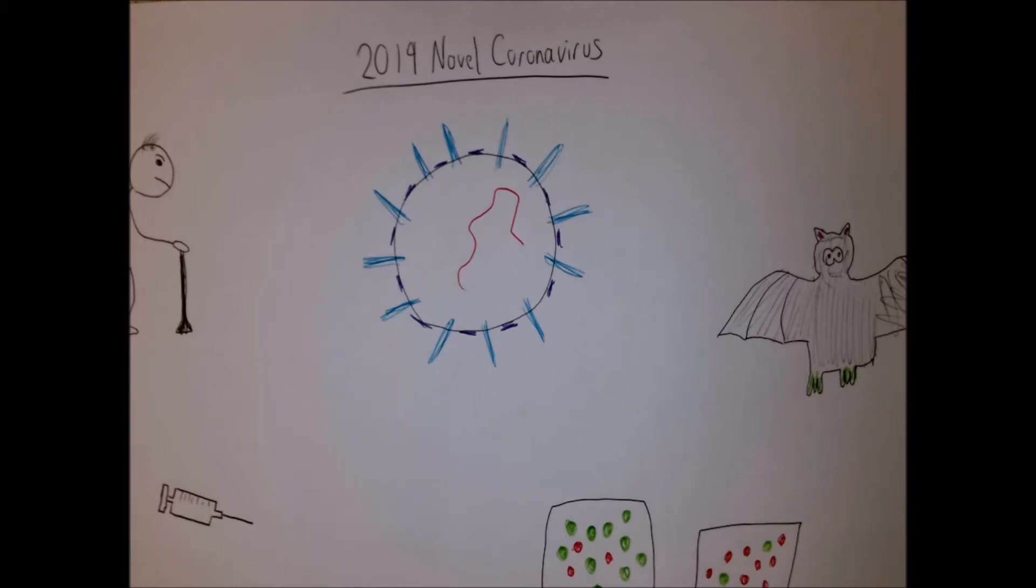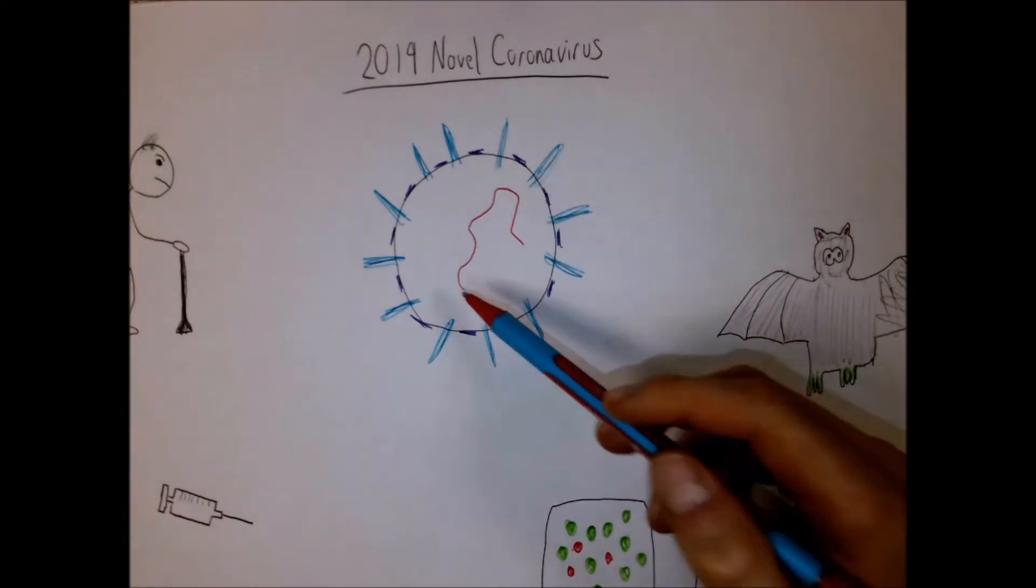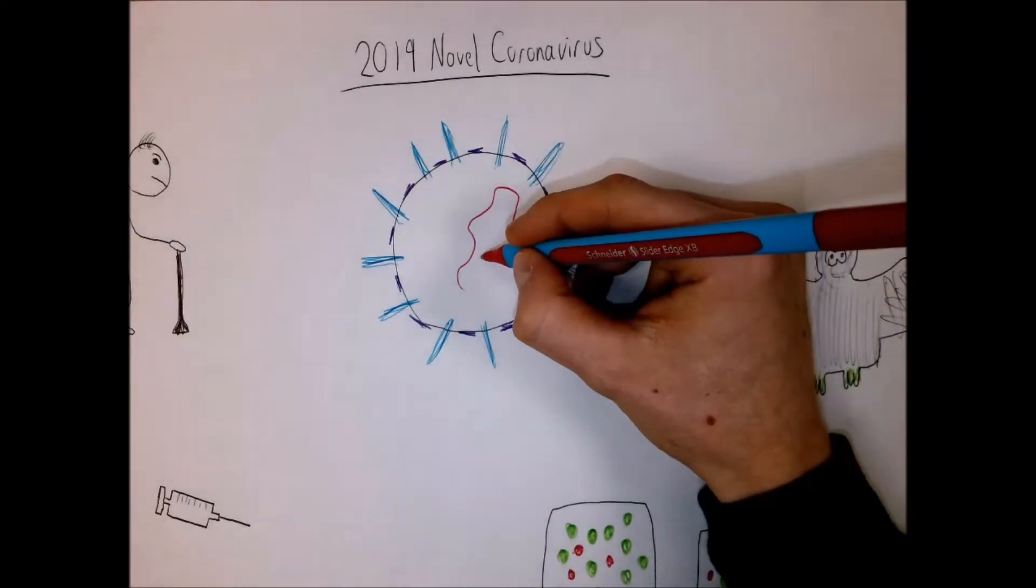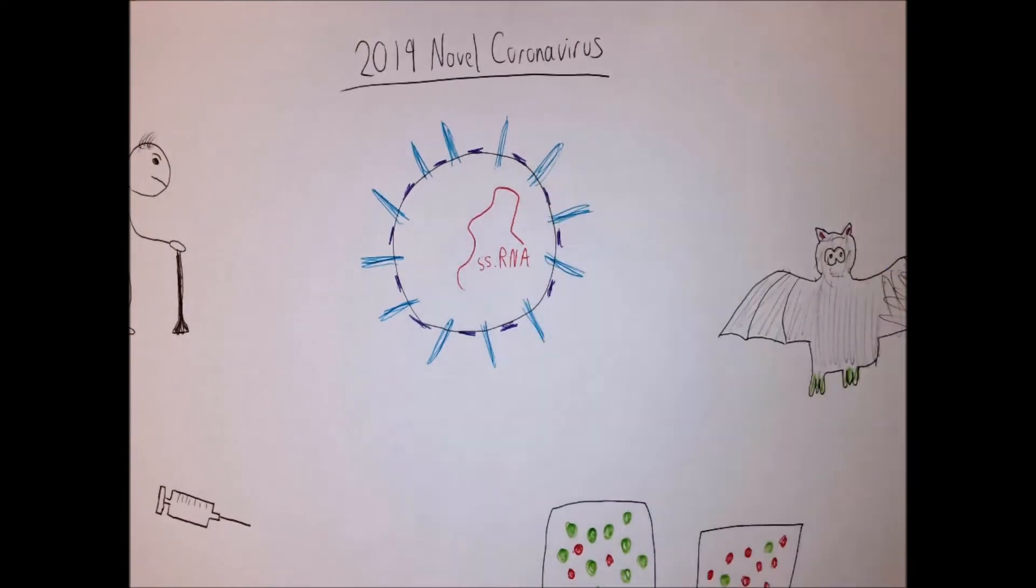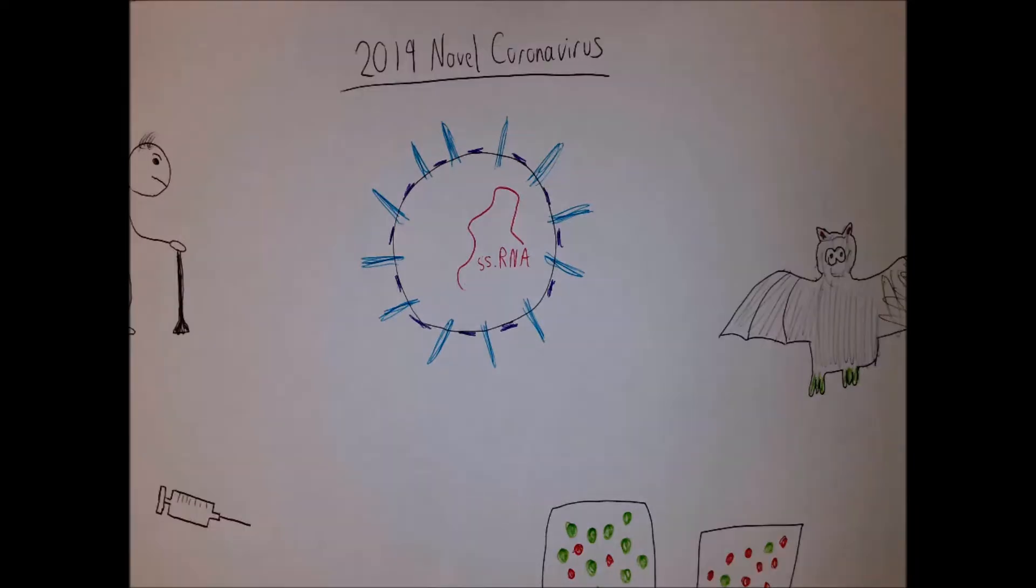So first of all, let's talk about the structure of the virus and what it actually looks like. This diagram shows what the virus is like, and it's got in the center single-stranded RNA, so it doesn't contain DNA like we do in our genome. It contains just a single strand of RNA.